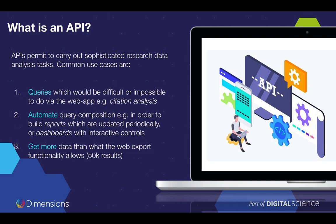The Dimensions APIs, like many other APIs, allow you to carry out sophisticated data operations. In the case of Dimensions, we're talking about research data and analysis tasks. It's useful to think of three main groups of actions that can be done with Dimensions APIs. A very common use case is to use the API to query the Dimensions database using queries that are relatively complex — maybe queries with a lot of constraints, a lot of keywords, or parameters with a very complex set of AND and OR logical connectives.